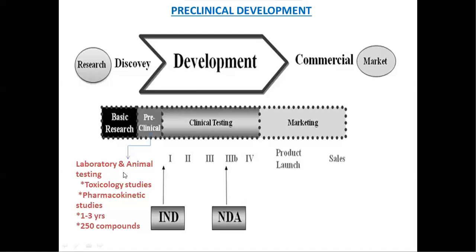After completion of pre-clinical studies, clinical studies begin, which are conducted on humans. Two important applications are the IND — Investigational New Drug application — which contains information about pre-clinical studies, and the NDA. The FDA reviews these documents and finally gives approval to the manufacturer to release the drug into the market.